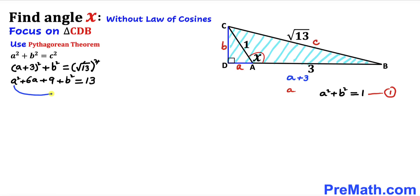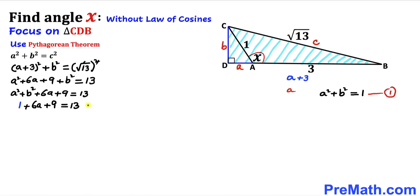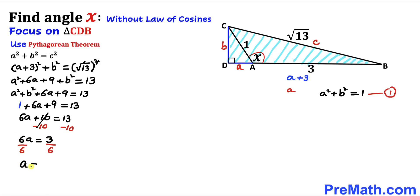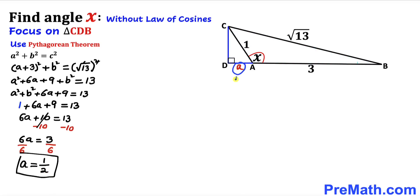Let's rearrange: a² + b² + 6a + 9 = 13. From equation 1 we know a² + b² = 1, so replacing that gives 1 + 6a + 9 = 13, which simplifies to 6a + 10 = 13. Subtracting 10 from both sides gives 6a = 3. Dividing both sides by 6, our value of a turns out to be 1/2.